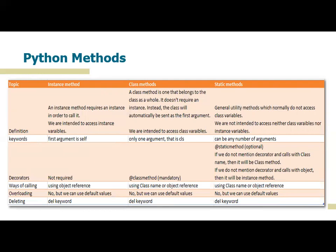Some people may wonder about the difference between class methods and static methods. An instance method requires an instance in order to call it and is intended to access instance variables. For class methods, the method belongs to the class as a whole; it does not require an instance. Instead, the class will automatically be sent as the first argument. So if you are planning to access the class variables that are outside all the methods, you will use class methods.